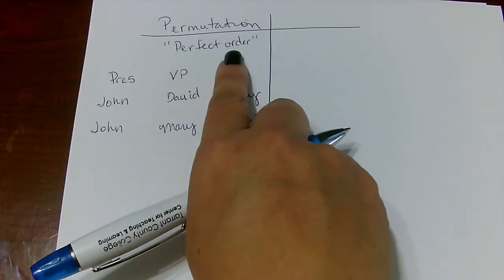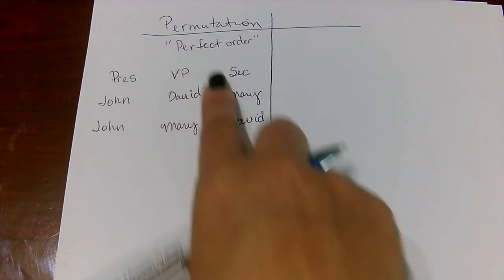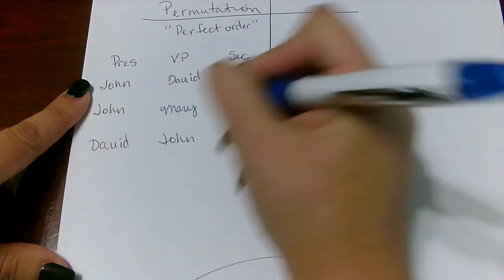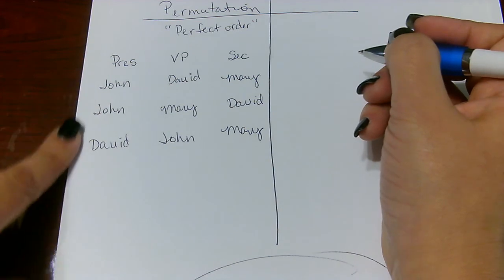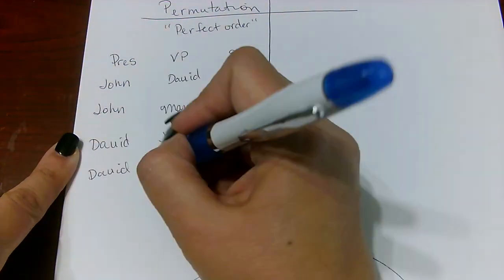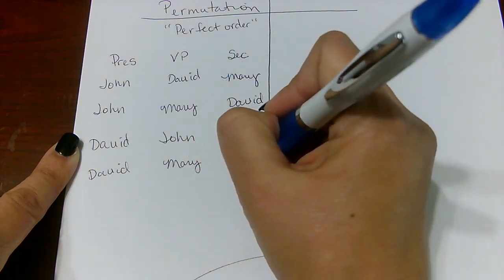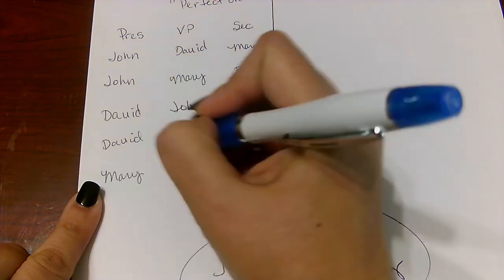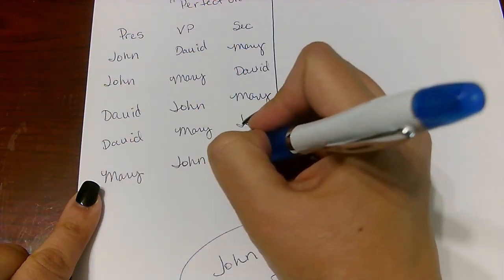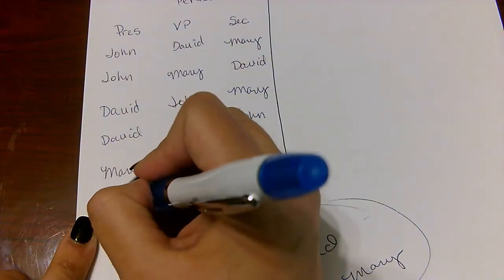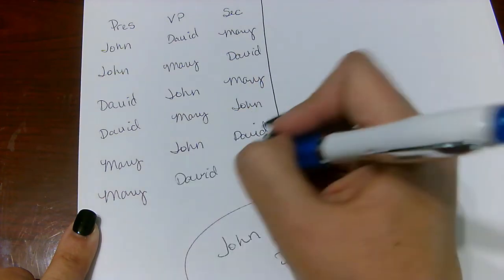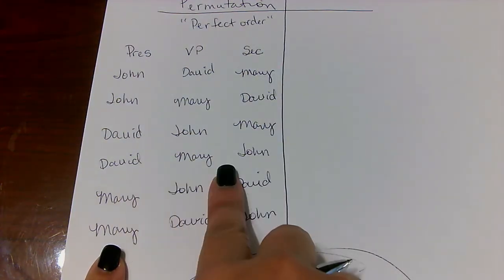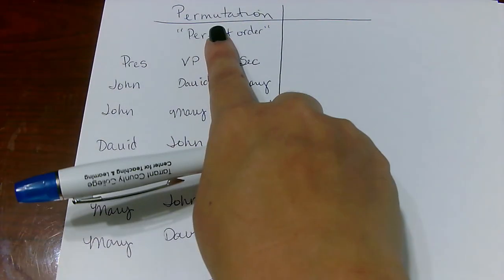We could also have David as President, John as Vice President, and Mary as Secretary. David could be President, Mary Vice President, and John Secretary. Or Mary as President with John as Vice President and David as Secretary. Or Mary as President, David as Vice President, and John as Secretary. All of these arrangements are different — this is what we call a permutation.